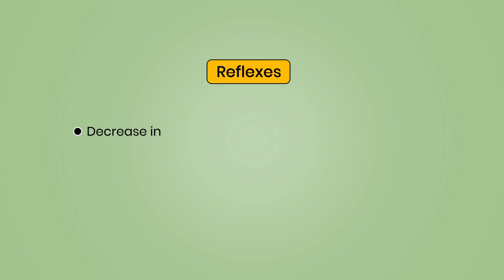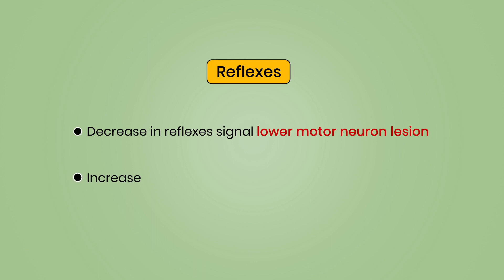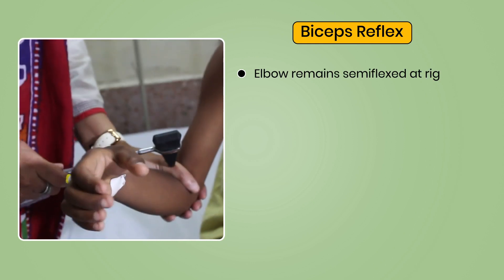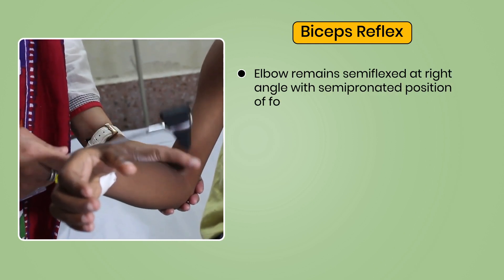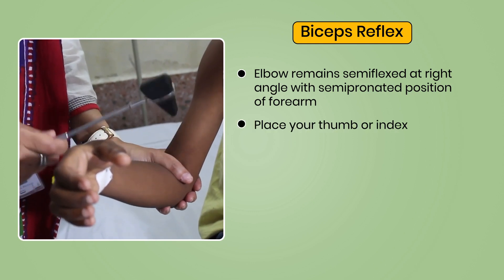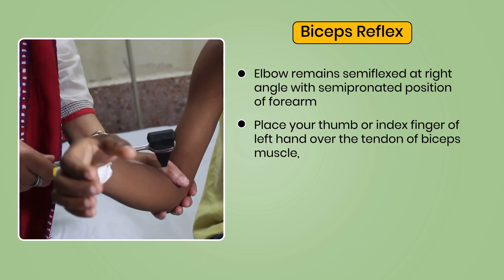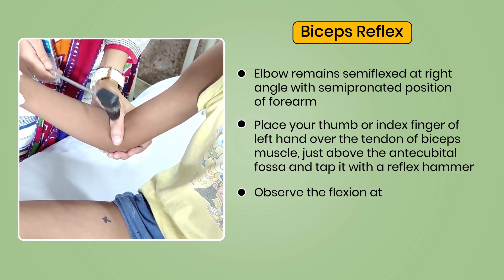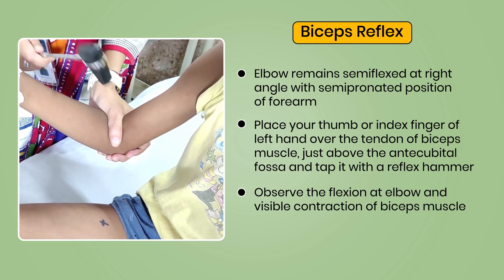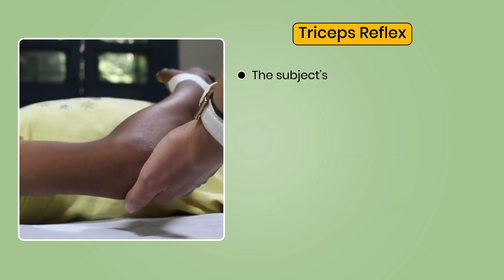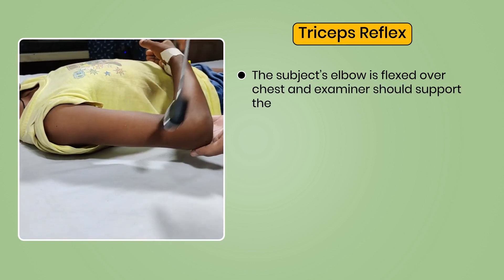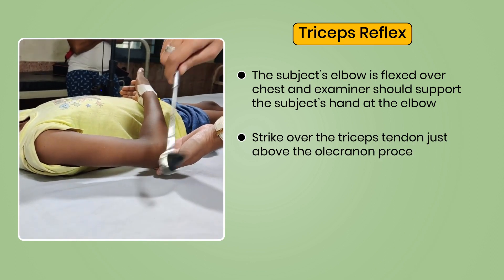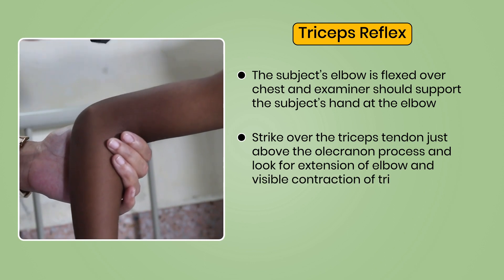A decrease in reflexes signals lower motor neuron lesion, whereas an increase signals upper motor neuron lesion. Biceps reflex: elbow remains semi-flexed at right angle with semi-pronated forearm. Place your thumb or index finger over the biceps tendon just above the antecubital fossa and tap with a reflex hammer; observe flexion at the elbow and visible contraction of the biceps. Triceps reflex: flex the elbow over the chest, support the subject's hand, then strike the triceps tendon just above the olecranon process and look for extension of elbow and visible contraction of triceps.